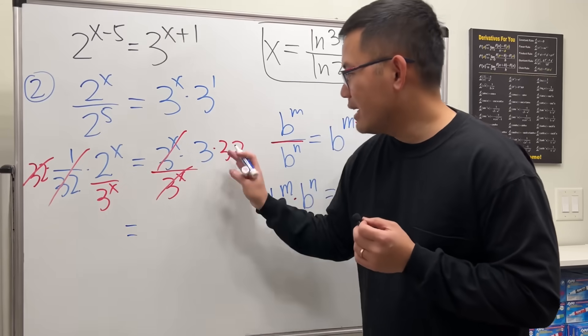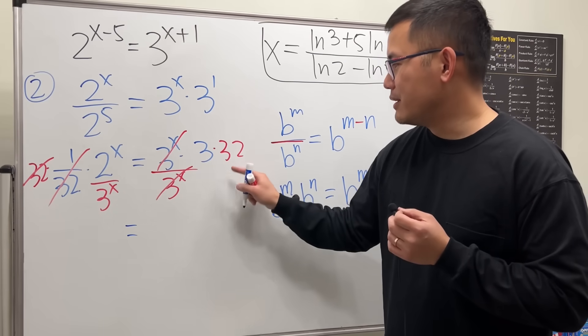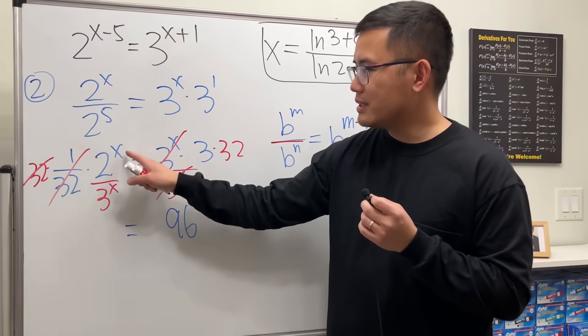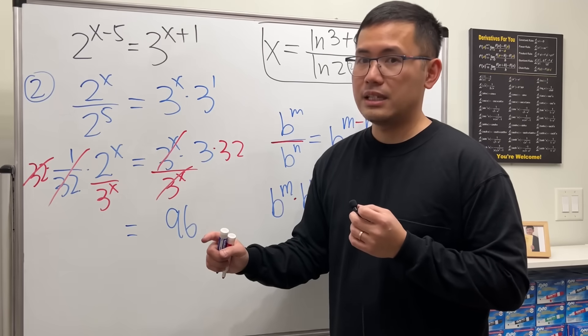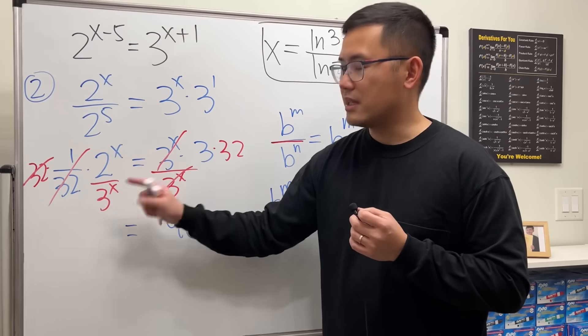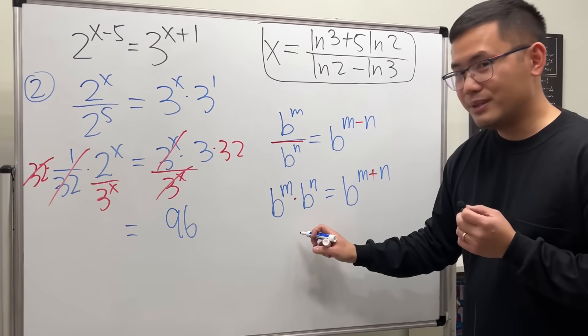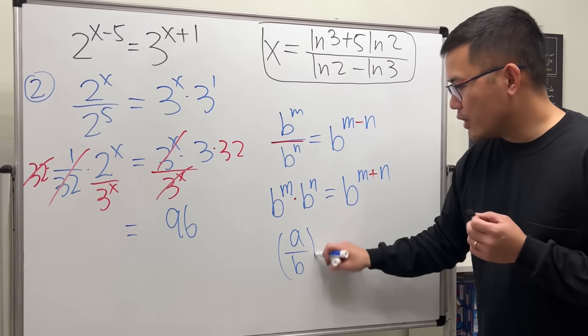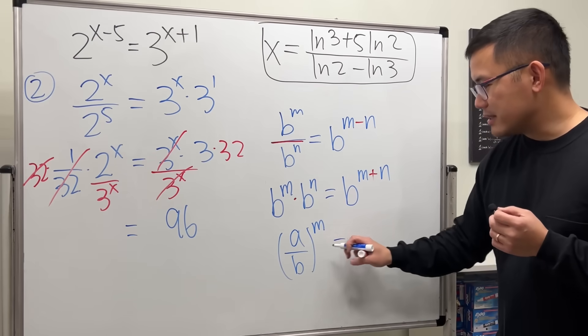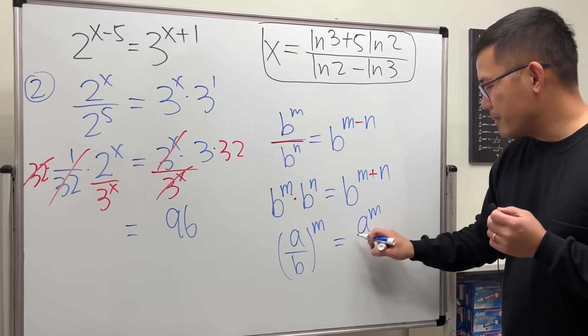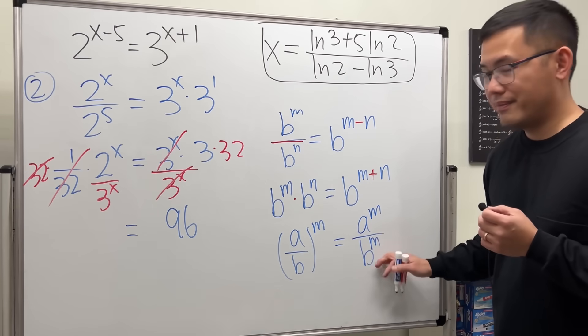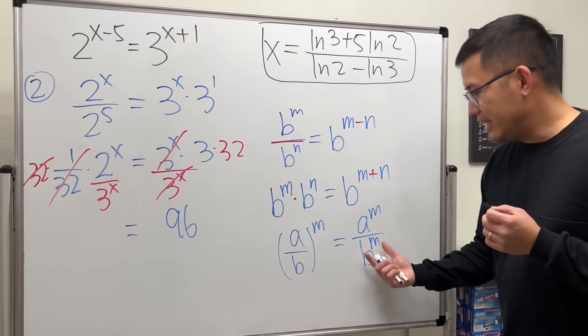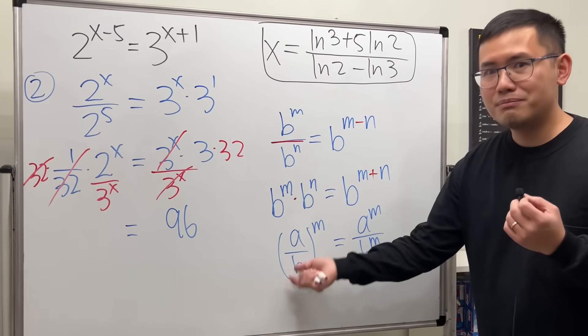Now, on the right-hand side, 3 times 32. That is just 96. Very nice. But for this right here, notice they have x and x in the exponent. But the bases are different. So now, another rule of exponent for you guys. If we have a over b raised to the m power, this right here is the same as a to the m over b to the m. When it's a division, we get to distribute the exponent. And again, can we look at it backwards? Yes.